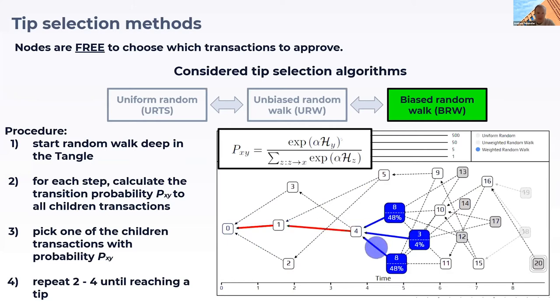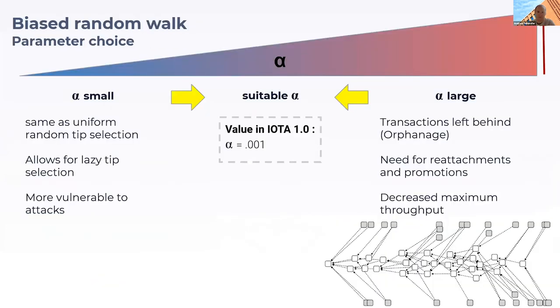In order to do so, there's a parameter alpha that is quite delicate to choose. If you choose it too small, you end up with something similar to uniform random tip selection, so you have the lazy tip selection problem again and are vulnerable to attacks.